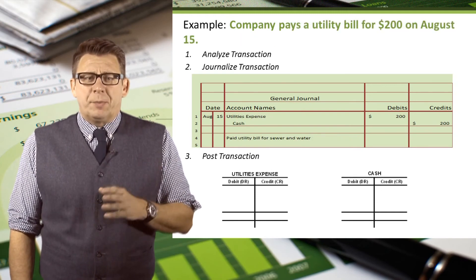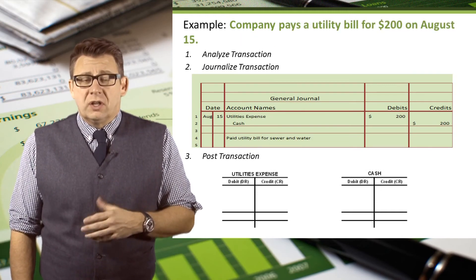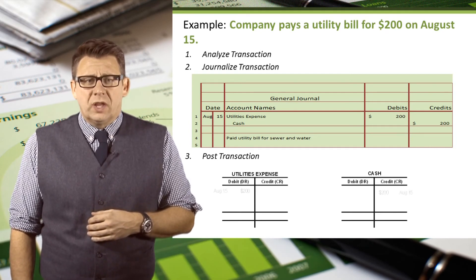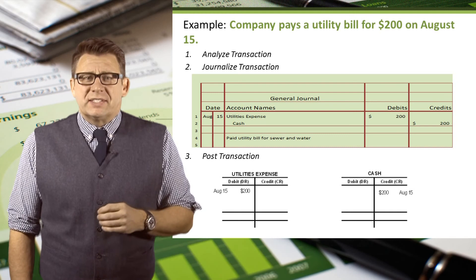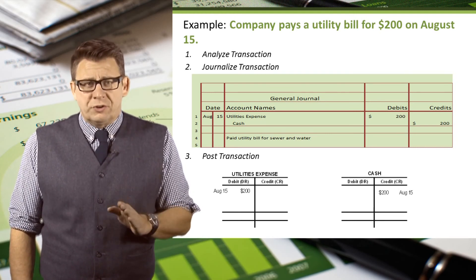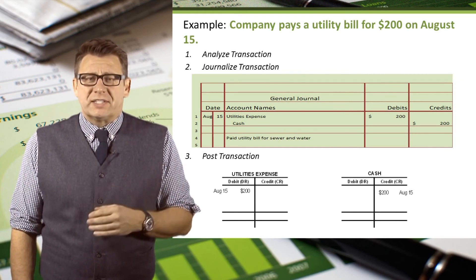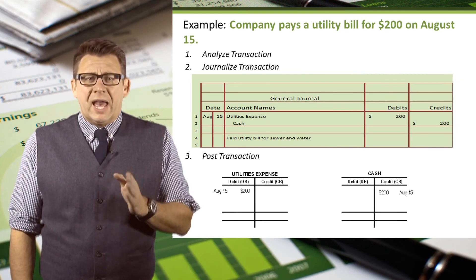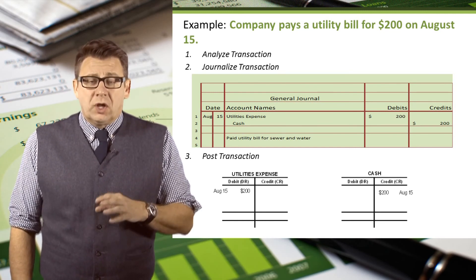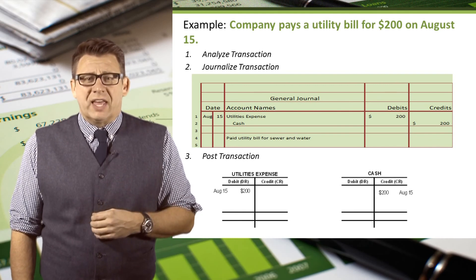In this final example, a company pays a utility bill for $200. The date is August 15th. Utilities expense is the debit account and the amount is $200, so we post $200 and the date to the debit side of the utilities expense account. Cash is the credit account and the amount is $200, so we post $200 and the date to the credit side of the cash account.